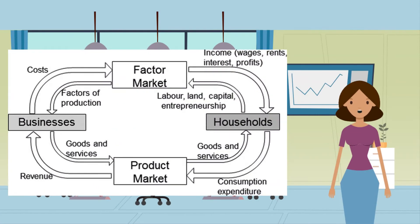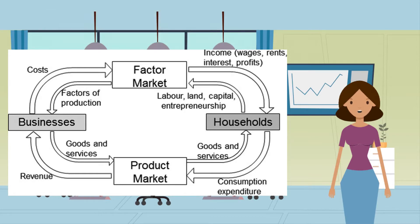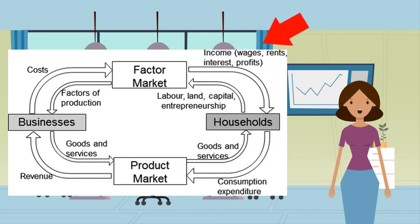This diagram is called the circular flow model of the macro economy. We aren't looking at just one market anymore — we are looking at all markets. It shows firms and households and their relationship to each other. For instance, in the factors market, households provide the factors of production to firms; in return they receive wages, rent, interest and profits.